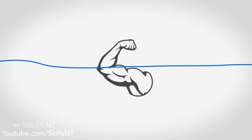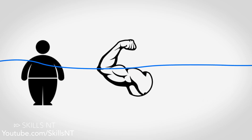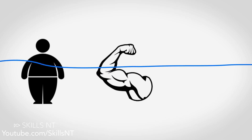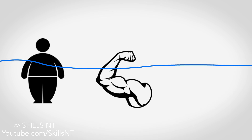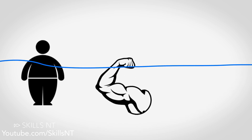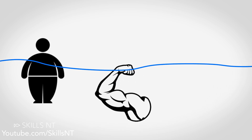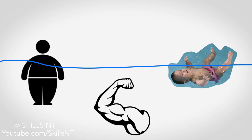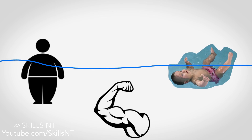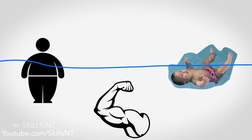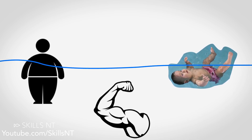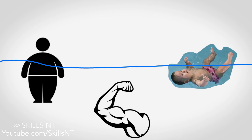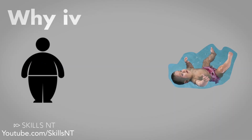Muscle is more dense than fat. So a fit person with very little fat in their body floats less than a baby that has very little muscle and light bones. A person with more body fat will also float more.